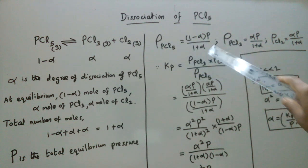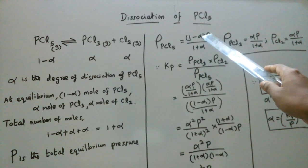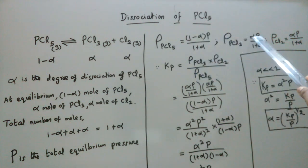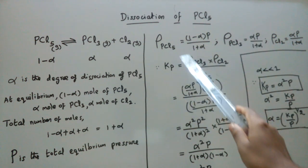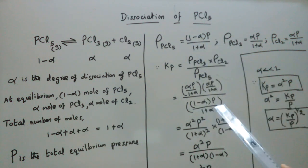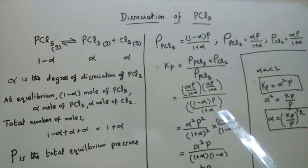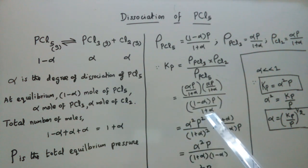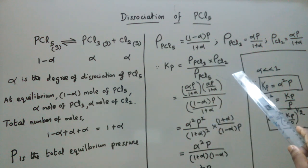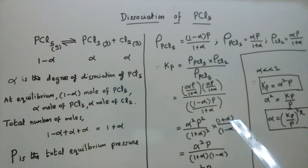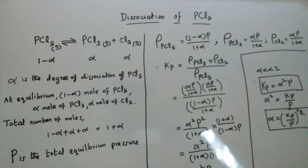Substituting into the Kp equation: the numerator is (alpha·P)/(1+alpha) times (alpha·P)/(1+alpha), and the denominator is (1 minus alpha)·P/(1+alpha). Multiplying the numerator gives alpha squared times P squared over (1+alpha) squared. The denominator (1+alpha) goes to the numerator as division, and one factor of P cancels.